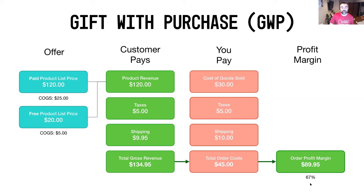This actually brings you back up to about 67% order margin — the same as the first example — while the customer perceives they're getting the same $20 in value. With the sales discount you took away $20 in value; here you're adding $20 in value on top. And you're getting the same margin percentage but with more absolute profit in your pocket. Giving something away can actually make you more money than taking something away.